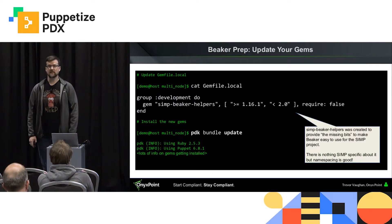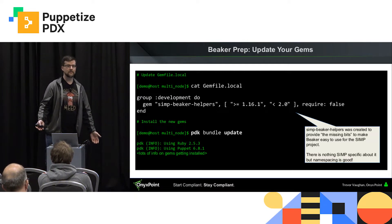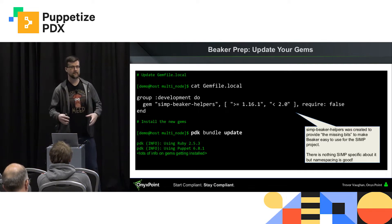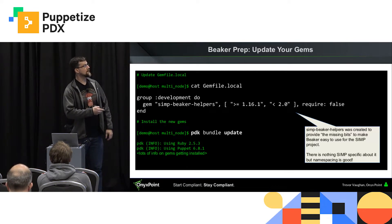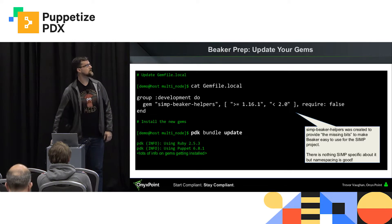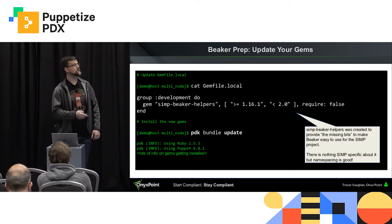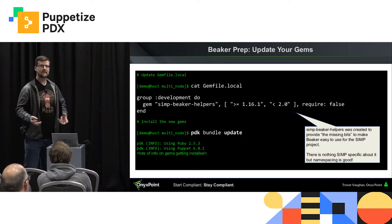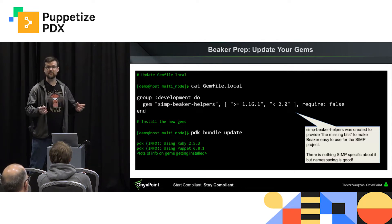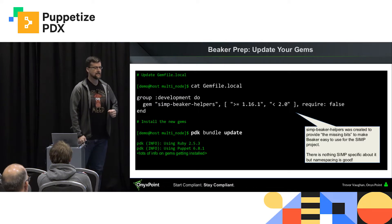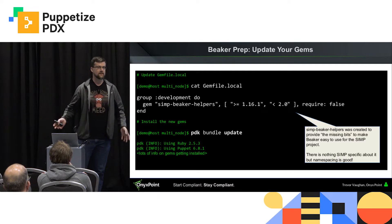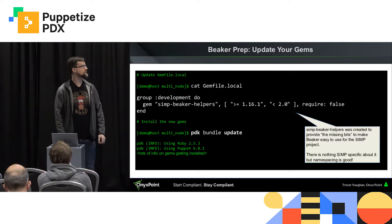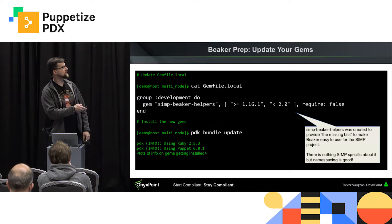The first thing we're going to do is update our Ruby gems. Gems are reusable code components that plug into Ruby. Gem files are the way that the tool Bundler knows what to install. In this case, we're installing SIMP Beaker Helpers — built to add the missing pieces to Beaker. There's nothing SIMP-specific about it; it's literally just a bunch of helpers that help you develop your Beaker tests. You run PDK bundle update — use the PDK command because that uses the PDK Ruby subsystem. It says it's using Ruby 2.5.3, Puppet 6.8.1, and then spews out information about the gems that get installed.